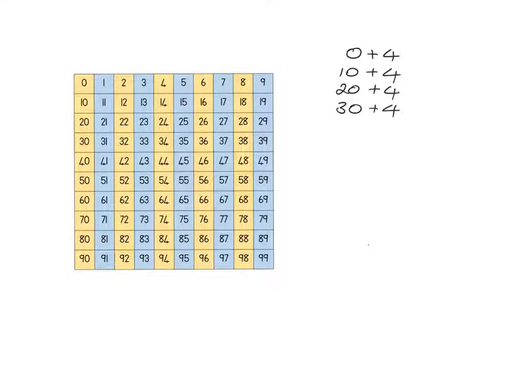We are going to use this picture here, a version of the hundred square, to help us see that because our number system is based on 10, knowing certain things about the single-digit numbers, we can easily and immediately transfer those to the other numbers.